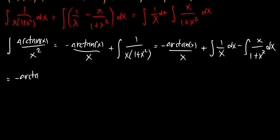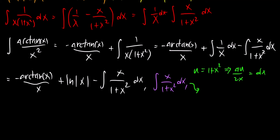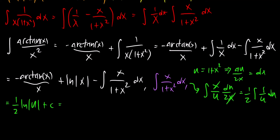Now we have to solve the integral of x over 1 plus x squared dx using substitution. We let u equal 1 plus x squared, which means that du over 2x equals dx. This integral becomes the integral of x over u times du over 2x, and the x's cancel, leaving us with 1 half the integral of 1 over u du. That equals 1 half the natural log of u plus c. Since u was 1 plus x squared, we have 1 half the natural log of 1 plus x squared plus c.